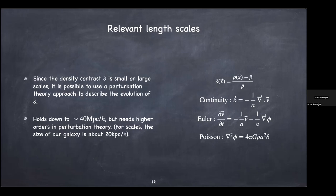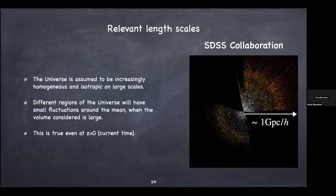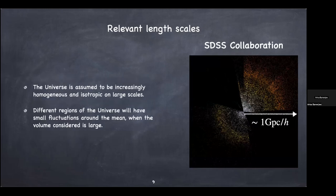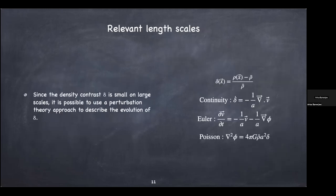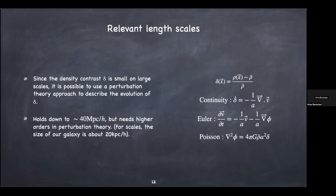But once you get down to about 40 megaparsecs or so, perturbation theory breaks down. Our galaxy is about 20 kiloparsecs in size, and the galaxy is highly nonlinear compared to the voids. Perturbation theory breaks down at roughly a thousand times the galaxy scale — maybe 25 to 40 megaparsecs. At these scales, you can no longer do perturbation theory.